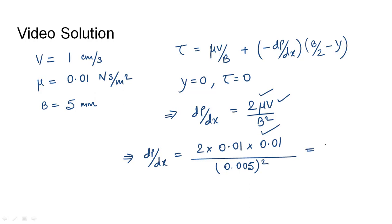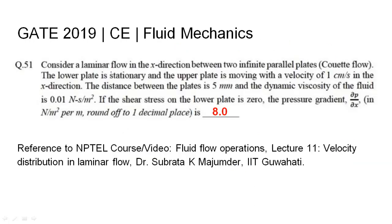This gives the pressure gradient in the x-direction as 8 Newton per meter square per meter length. In summary, for this Couette flow situation where the upper plate moves at 1 centimeter per second, the plate separation is 5 millimeters, dynamic viscosity is 0.01 Newton-second per meter square, and the shear stress on the lower plate is zero, the pressure gradient was found to be 8. The relevant NPTEL reference has been cited.